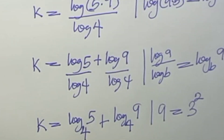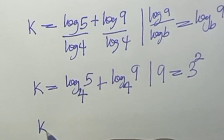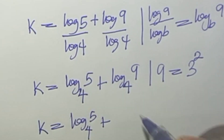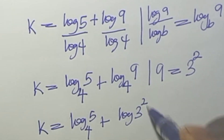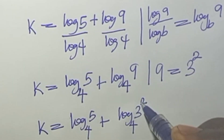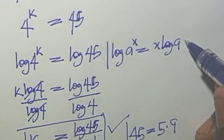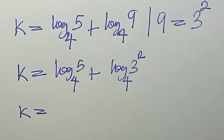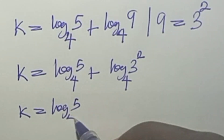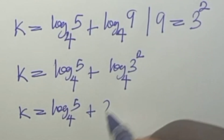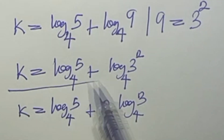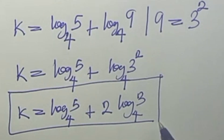Since 9 equals 3 to the power of 2, we replace 9 with 3 squared. So k equals log 5 base 4 plus log 3 to the power of 2 base 4. Bringing the power down, the simplified form of k is log 5 base 4 plus 2 log 3 base 4.